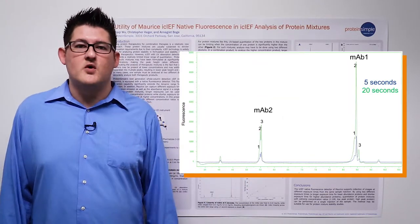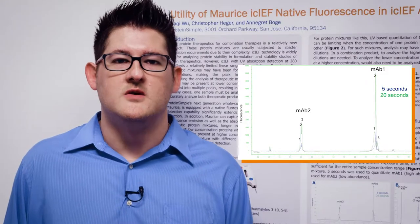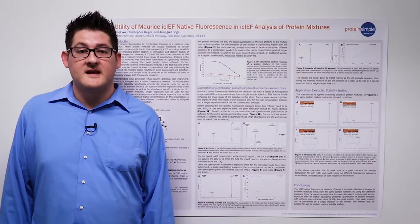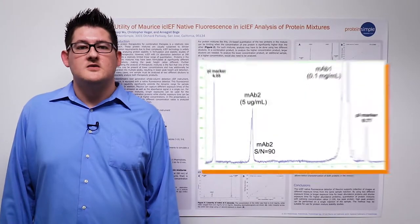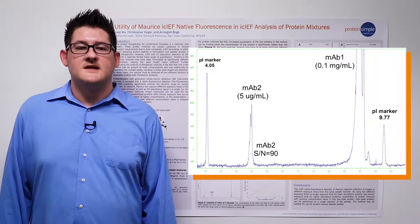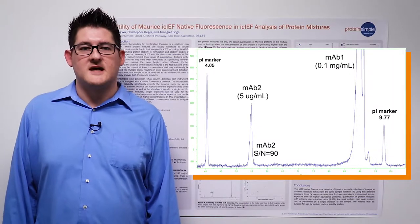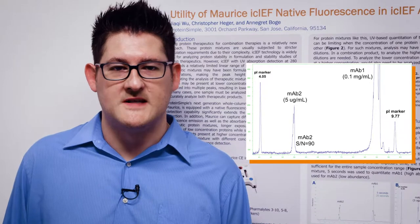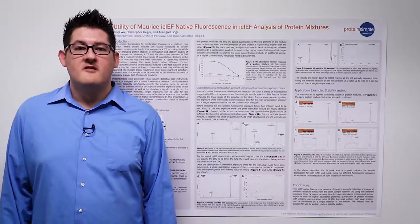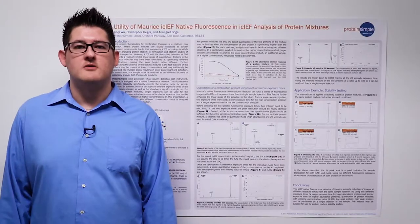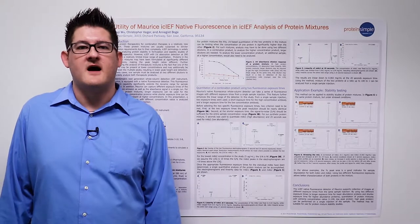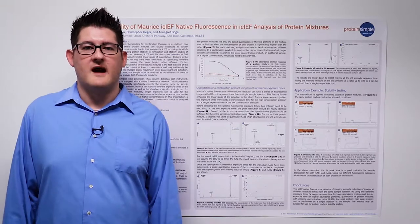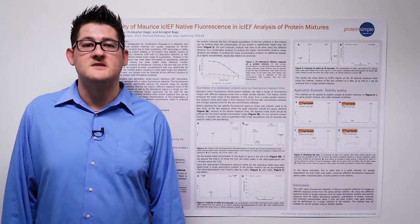First, it's important to make sure that at both fluorescence exposures being used, the resolution of the antibodies remains unchanged. Second, as shown in Figure 3b, using the shortest exposure time, the signal-to-noise should be sufficient for the entire test range. As we show for MAB2 at the 5-second exposure, the signal-to-noise ratio is 90. For a model protein mixture moving forward, we used a 5-second exposure to quantify the high-concentration MAB1 and a longer exposure of 20 seconds to quantify the low-concentration antibody MAB2.